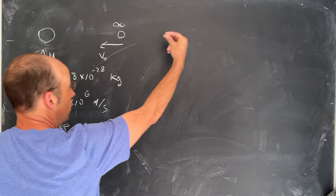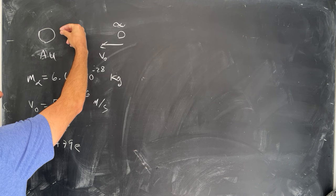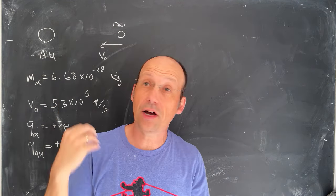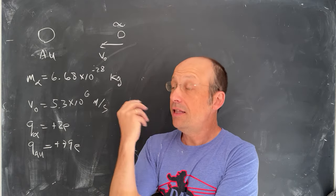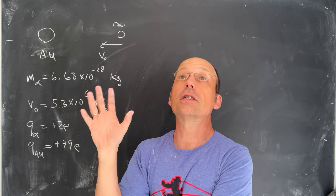Imagine that this alpha particle is shot towards the gold particle and it's going to slow down because they repel and it'll eventually stop and get repelled. And we want to find out how close it gets. Now why do we even care about this? This was really, really important—this is not part of the problem. This is just bonus stuff.